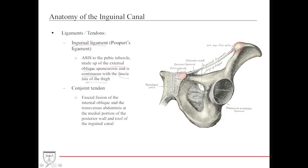Another important structure is the conjoined tendon, which is a fascial fusion of the internal oblique and the transverse abdominis aponeurosis. It is located on the medial and posterior portion of the inguinal canal and helps make up the roof of the inguinal canal.